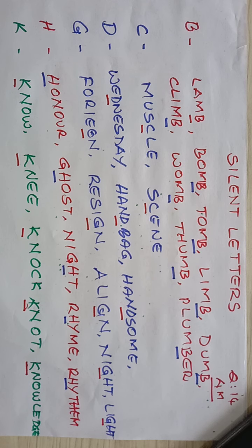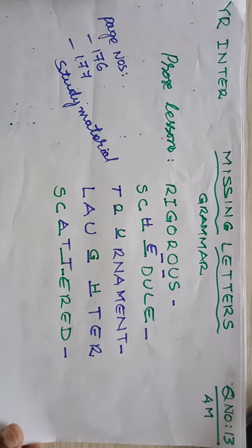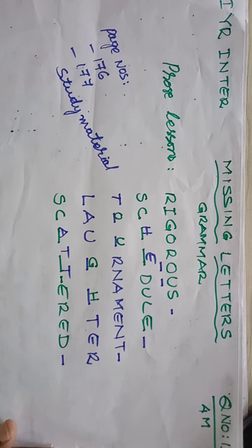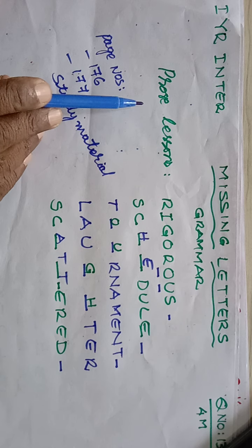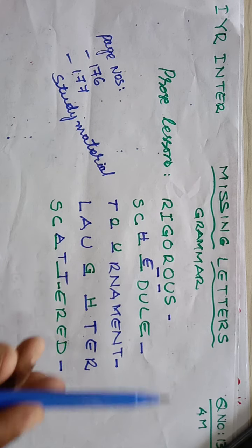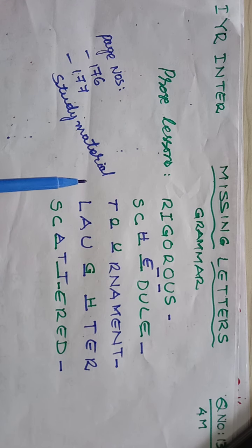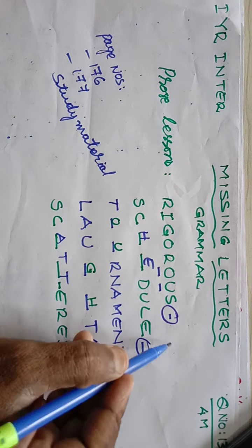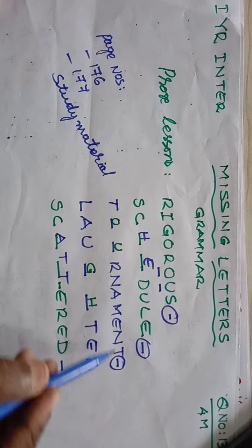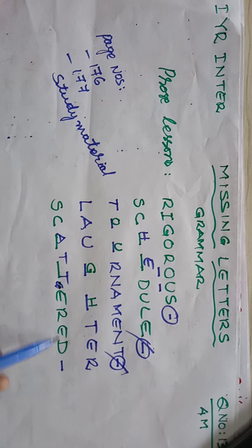Hoping that you will be scoring good marks. Now let's take another concept — that is missing letters. What actually are missing letters? They'll give you certain words and ask us to identify which letter is missing. Mostly they'll give from prose lessons. I gave you examples like rigorous, schedule, tournament, laughter, and scattered.